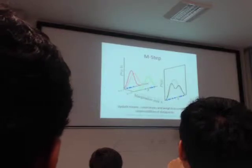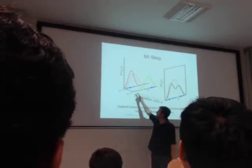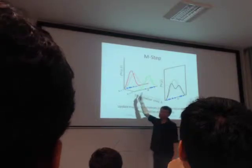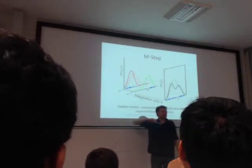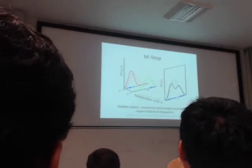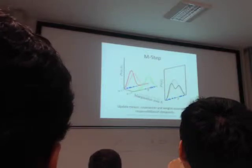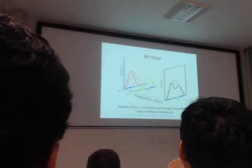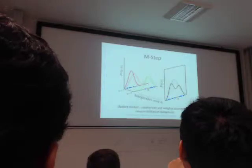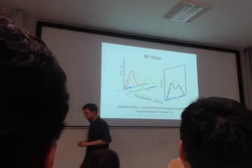Do we expect to always get these Gaussians given the same data sets if I run mixtures of Gaussians multiple times? No. What does it depend on? Your initial solution, your initialization — you drop it down and you let it go.